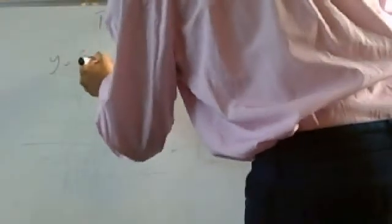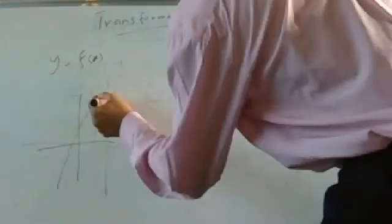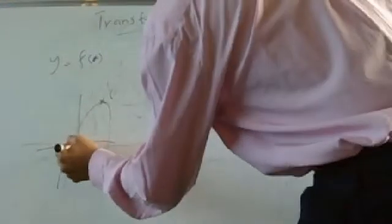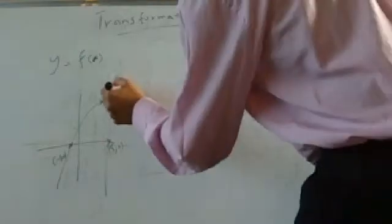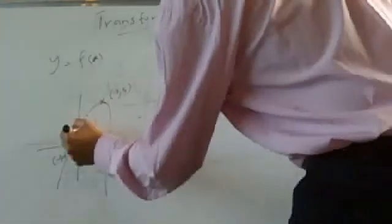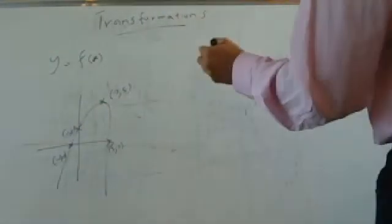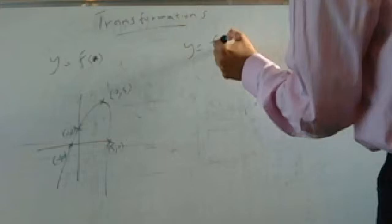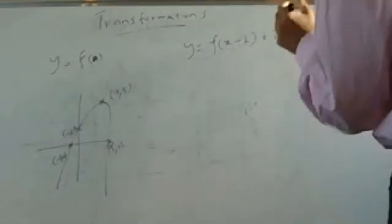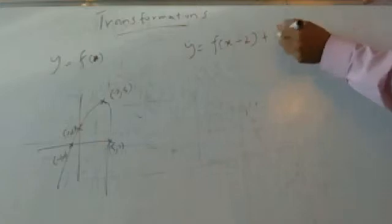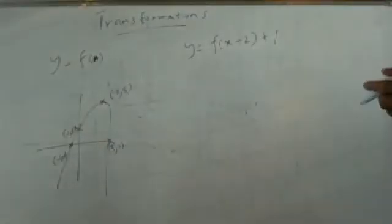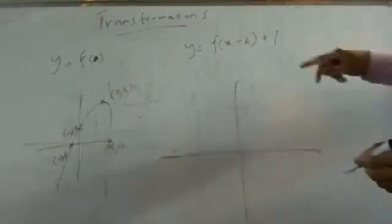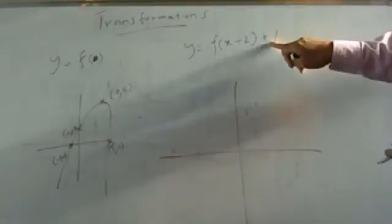So let's say I have y equals f(x) and this is the graph. Let's say it's crossing at minus 1, 0 and 5, 0 — so that means 6 units across. Let's say this is the point 2, 5 and also 0, 1. So now if I do f(x − 2) + 1 — that means all the x-coordinates are going to the right two units, and the y-coordinates are going up one unit.